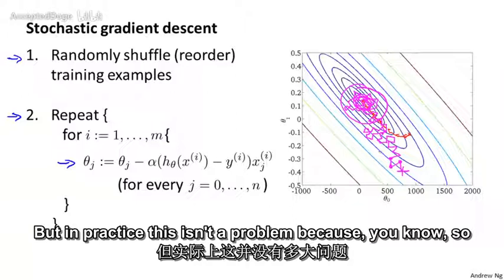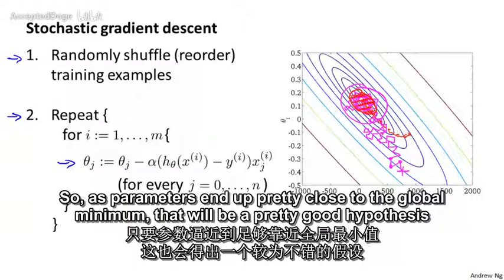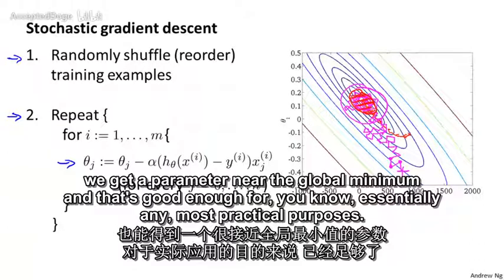In practice, this isn't a problem, because so long as the parameters end up in some region pretty close to the global minimum, that will be a pretty good hypothesis. Usually running stochastic gradient descent, we get a parameter near the global minimum, and that's good enough for almost any practical purpose.